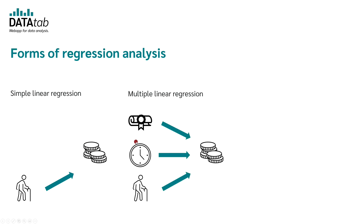In multiple linear regression, several independent variables are used to predict the dependent variable. So we could use the highest educational level, the weekly working hours, and the age of a person. Therefore, the difference between a simple regression and a multiple regression is that in one case only one independent variable is used, and in the other case we use several different independent variables.